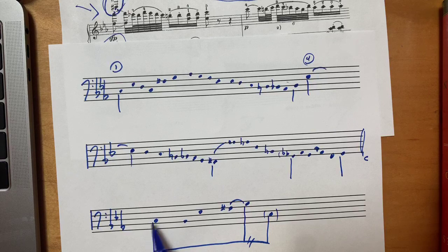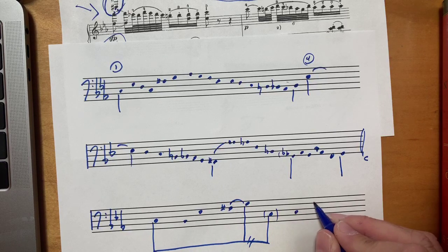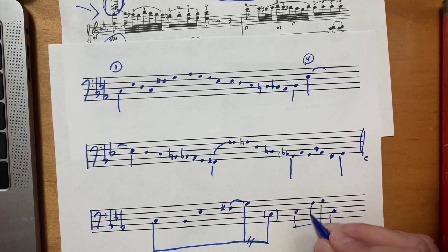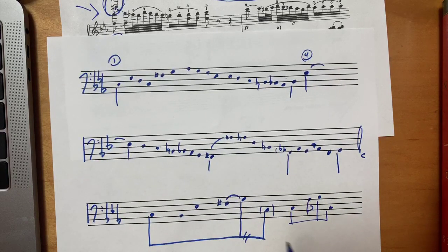You see how this F-sharp is a neighbor note. Now here, when we're in minor, we don't have this as commonly as our background figure, where we have this as the predominant.